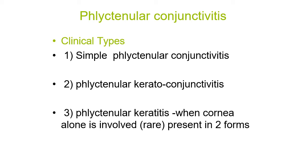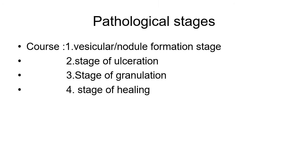There are some types: simple phlyctenular conjunctivitis; phlyctenular keratoconjunctivitis when the cornea is simultaneously affected along with conjunctiva; and phlyctenular keratitis when the cornea alone is involved (which is rare). The pathological stages are: vesicular or nodular formation at the limbus, ulceration stage, healing by granulation, and finally scar formation.